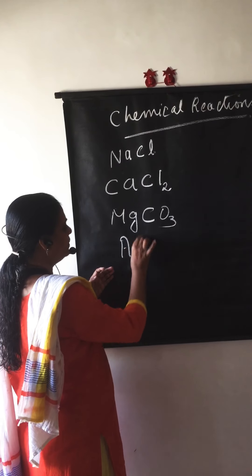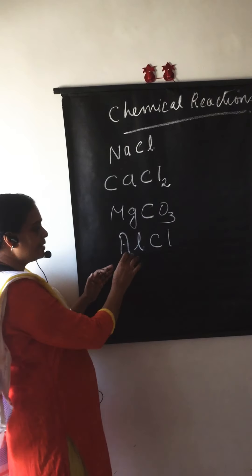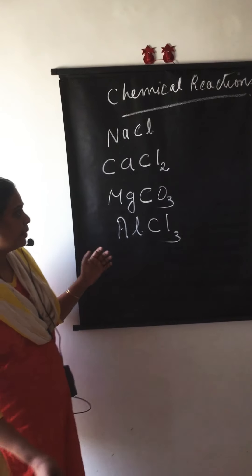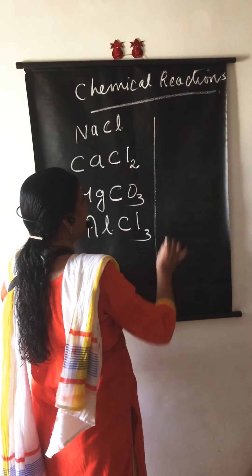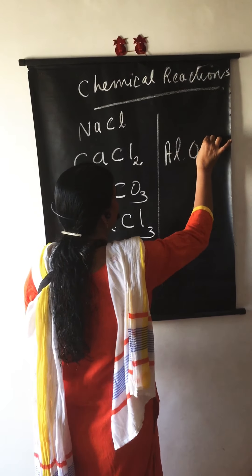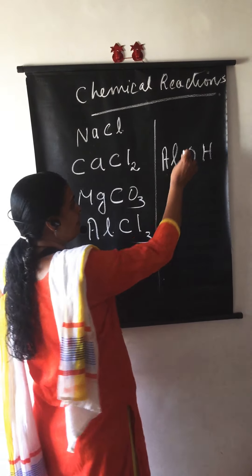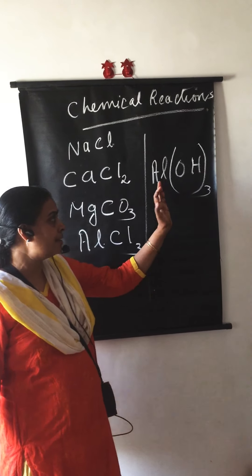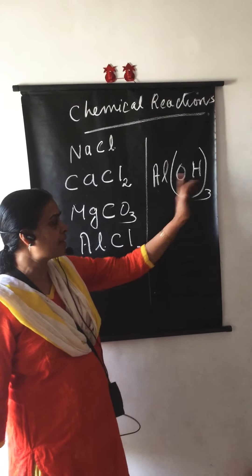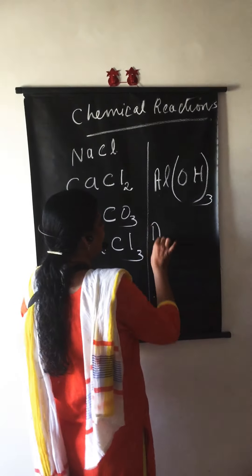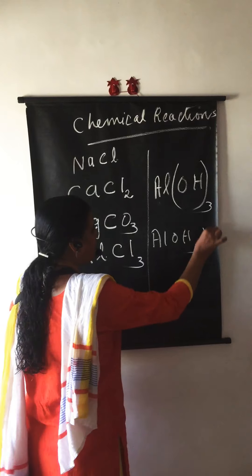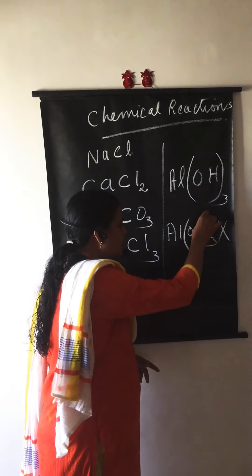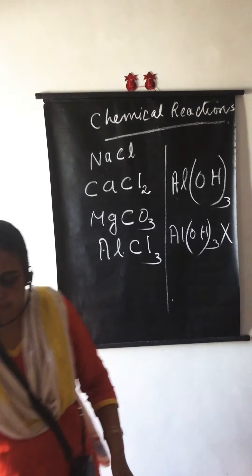Suppose if you take aluminium chloride: aluminium is Al, chlorine is Cl. The valency of aluminium is 3, so it should be written under chlorine. Now suppose aluminium hydroxide: aluminium is Al, hydroxide is OH. The valency of aluminium should be written outside the bracket — Al(OH)3. You can't write AlOH3 — that is a wrong method because the 3 is applicable for both oxygen and hydrogen, so the bracket must be there.